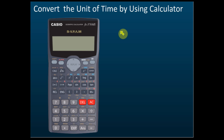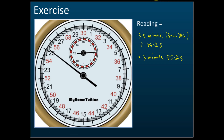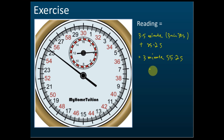We convert the unit of time using a calculator. Sometimes they give you minutes — like the previous example: 3 minutes 55.2 seconds, and they want the answer in seconds. So we take 3 minutes, which equals 60 seconds, then 3 times 60, plus 55.2 seconds, which equals 235.2 seconds.